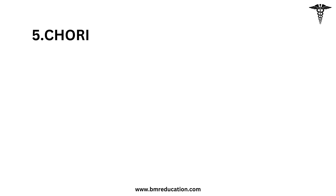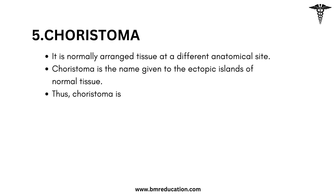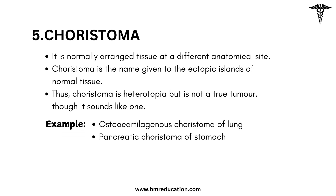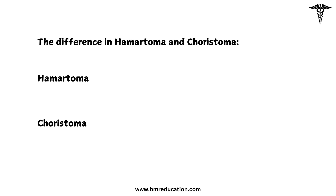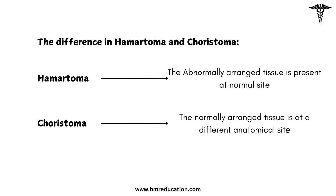Choristoma is normally arranged tissue at a different anatomical site. Choristoma is the name given to ectopic islands of normal tissue. Thus, choristoma is heterotopia but is not a true tumor, though it sounds like one. It is seen in osteocartilaginous choristoma of the lung and pancreatic choristoma of the stomach. Choristoma differs from hamartoma: in hamartoma, the abnormally arranged tissue is present at a normal site, but in choristoma, the normally arranged tissue is at a different anatomical site.